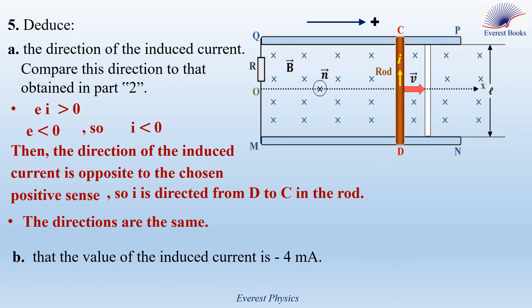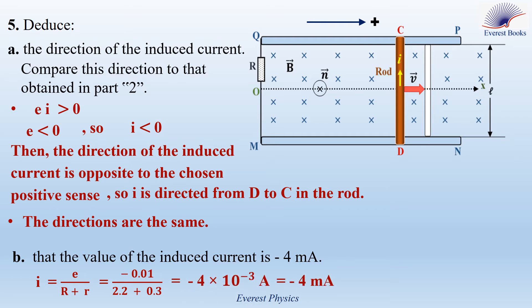Part 5B: deduce that the induced current equals −4 milliamperes. Using I = E / (R_total): E = −0.01 V, external resistance R = 2.2 ohms, internal resistance of rod = 0.3 ohms. Therefore I = −0.01 / (2.2 + 0.3) = −4×10⁻³ A = −4 milliamperes.